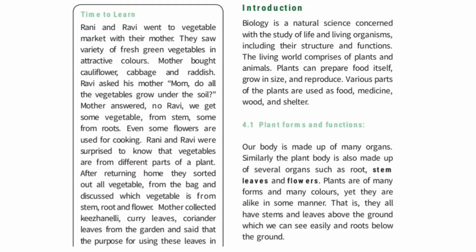Chapter 4.1: Plant Forms and Functions. Our body is made up of many organs. Similarly, the plant body is also made up of several organs such as roots, stems, leaves, and flowers. Plants are of many forms and many colours, yet they are alike in some manner — they all have stems and leaves above the ground, which we can see easily, and roots below the ground.